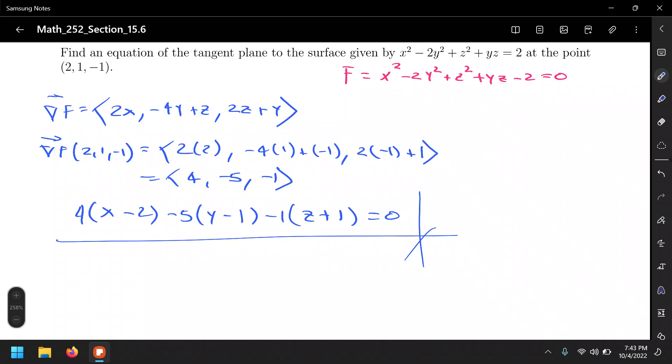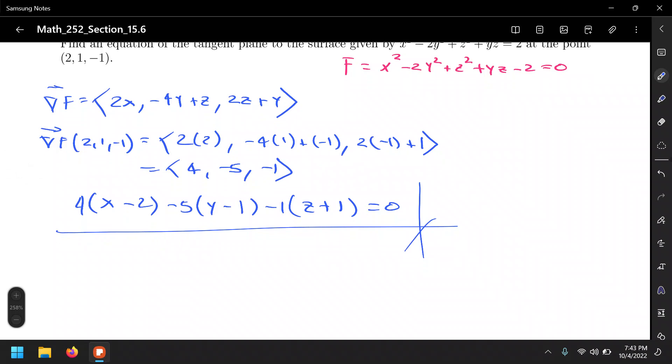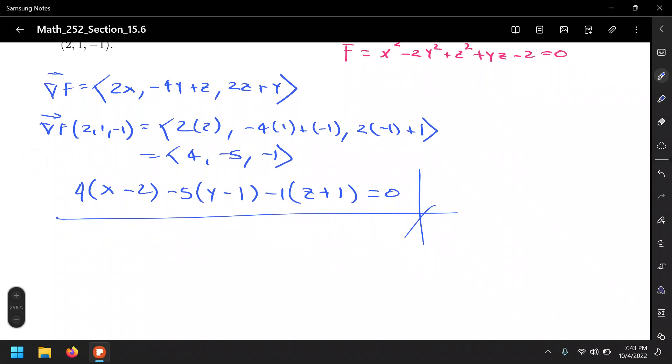However, I see some of you did all the distribution and all that. So you got 4x minus 5y minus z equals to, that's negative 8 plus 5, is that negative 3? And then minus 3 minus 1 is that negative 4, so equals to 4, positive 4 on the right-hand side. Yep.